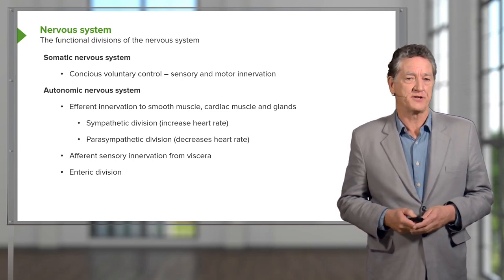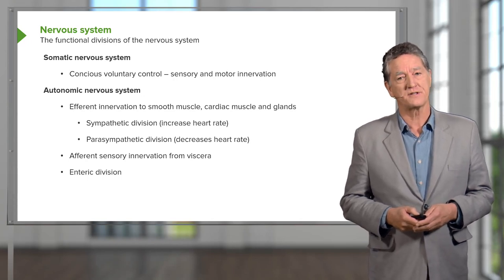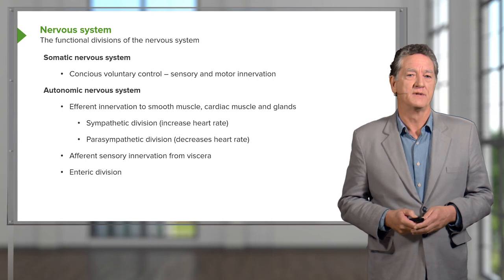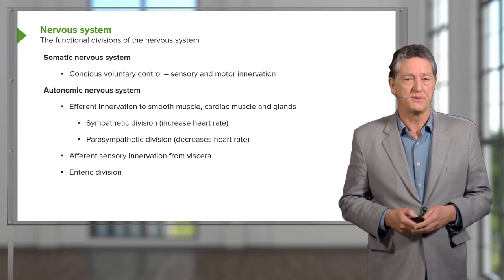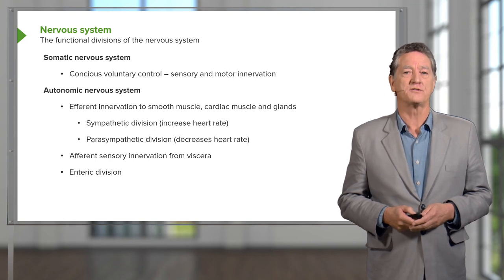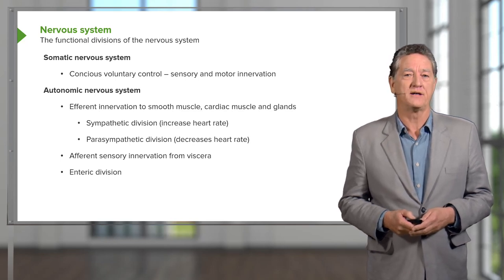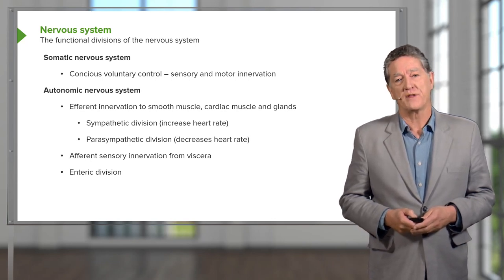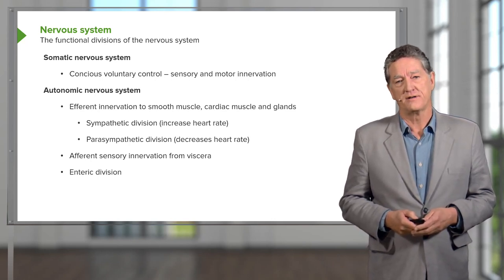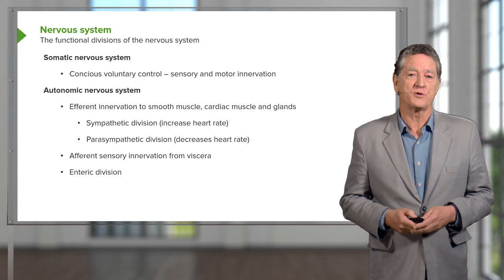The enteric division is a totally different system, separate from both the somatic and the autonomic nervous system. It refers to a network of neurons or nerve cells found along the gut tube, and those neurons control the activity of the muscle layers of the gut, working independently of the central nervous system. I'll refer to these neurons and this network of nerve fibres when I talk about the gut in a later lecture.